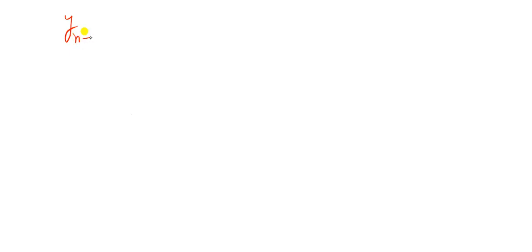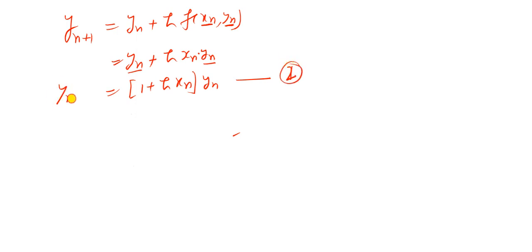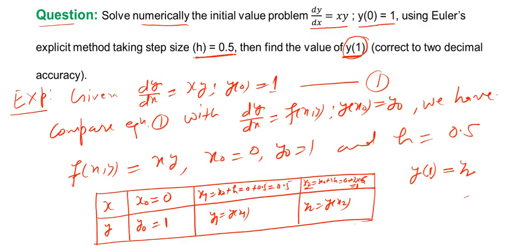Applying the Euler's general approximation formula y_{n+1} = y_n + h * f(x_n, y_n), and since f(x, y) = xy, we replace x with x_n and y with y_n to get f(x_n, y_n) = x_n * y_n. Taking y_n as common, this becomes y_{n+1} = y_n(1 + h * x_n). This is equation 2. According to the table, we compute y1 and y2: first compute y1 using x1, then compute y2 using x2.